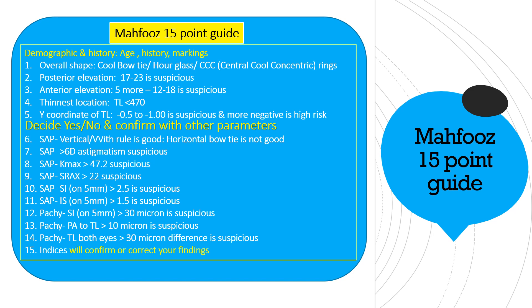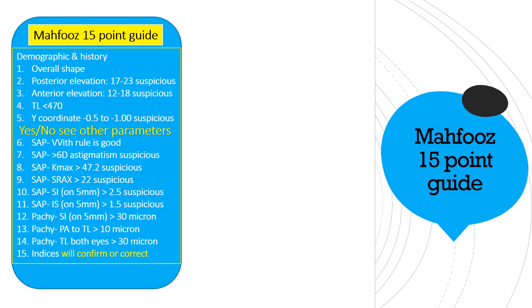The first point is the overall shape of the cornea — look for the cool bow tie or glass appearance, and CCC's central cool concentric rings. Then you look for the posterior elevation, then the anterior elevation, then the thinnest location, and the y-coordinate. After these five we'll make our mind and decide whether corneal pathology is present or it is a normal cornea, and then with the rest of the parameters we'll confirm the findings.